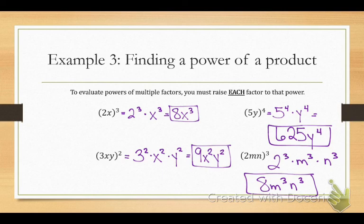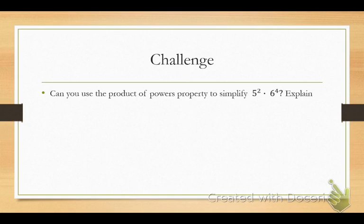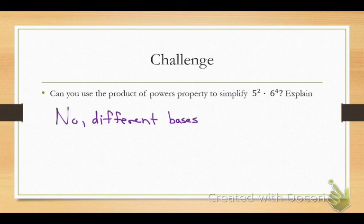Any questions? So I have this question for you. Can you use the product of powers to simplify 5 squared times 6 to the fourth? Go ahead and answer that on your paper. If your answer is yes, tell me why. If your answer is no, tell me why not. So what do you think guys? Yes or no? No. Why would you say no? They don't have the same base, so you can't add them. So you can't do product of powers when you have different bases. And let me let you in on a hint. If this was addition, like let's say it was 4 to the third power plus 4 to the fourth power, you still could not do product of powers because now it's addition.